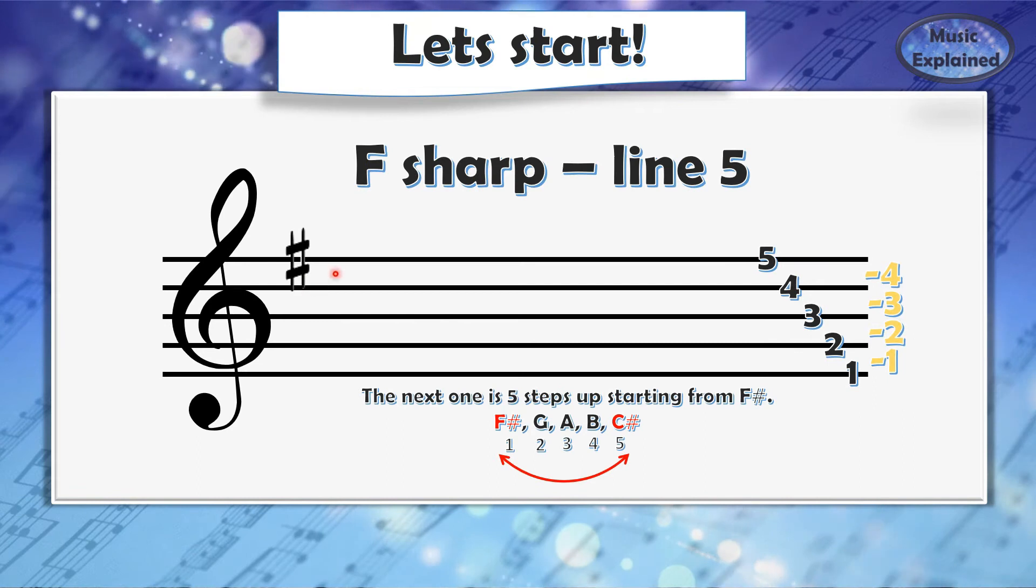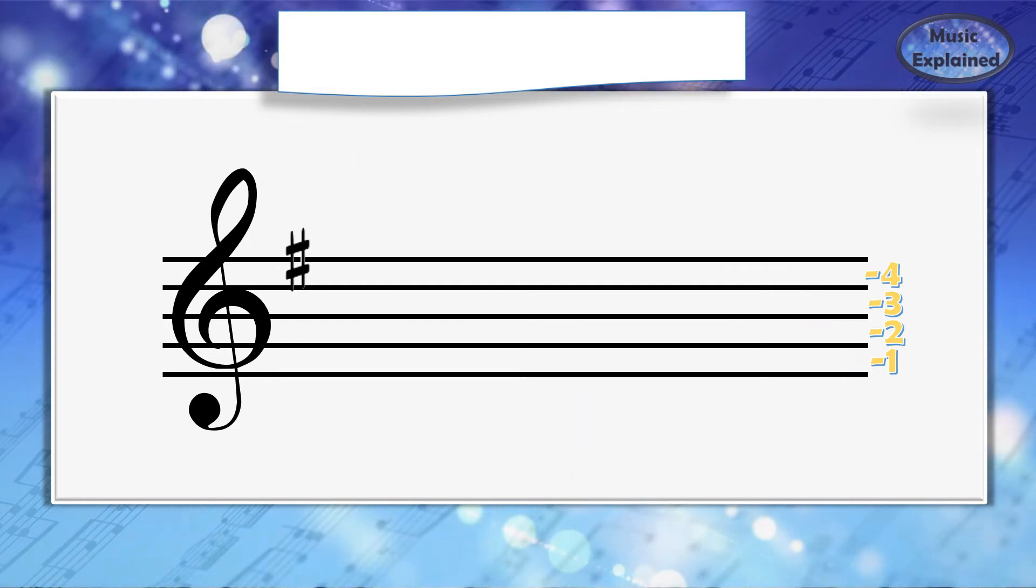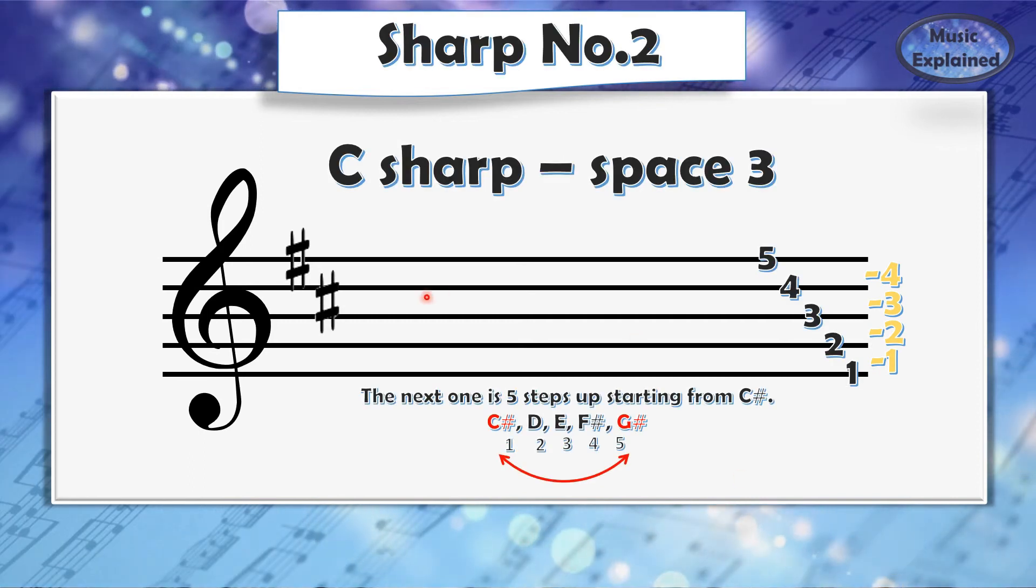F-sharp is on the fifth line on the music staff. The next one is five steps up starting from F-sharp. So F-sharp, G, A, B, C-sharp is going to be our next sharp.